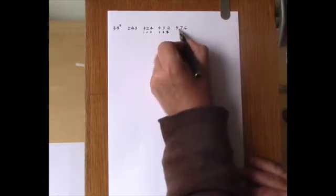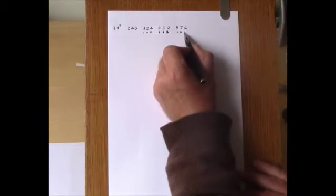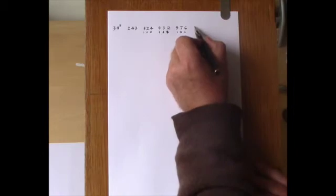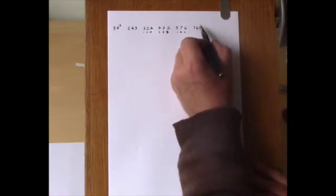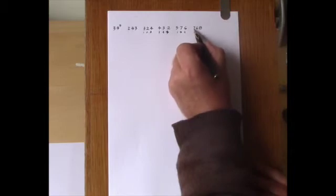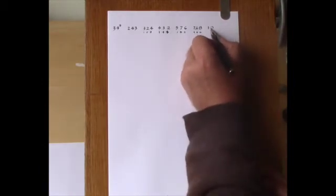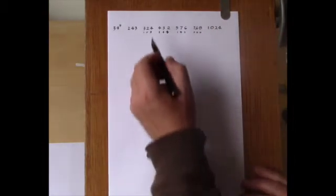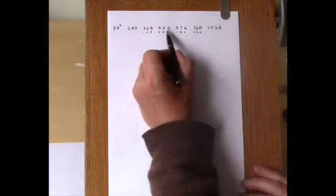Divide this by 3. Well, 3 into 19 is 57. So that's 192. Multiply 192 by 4 and we get 768. Divide this by 3 and we get 3 into 7 goes 2, remainder 1. 3 into that goes 5, remainder 1: 2, 5, 6. Multiply this by 4, it's 1024. So we have this geometric sequence consisting of 6 terms.